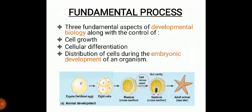The next point is fundamental processes, which means the basic processes, and it includes the aspects of developmental biology along with the control of: number one, cell growth, which refers to an increase in the total mass of cells including both cytoplasmic, nuclear and organelle volume; number two, cell differentiation, in which a cell changes from one cell type to another. Differentiation occurs numerous times during the development of a multicellular organism. As you can see in the diagram, how a simple zygote or a fertilized egg changes into a complex system of tissues and cell types.